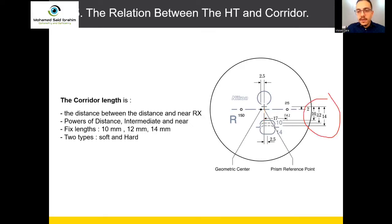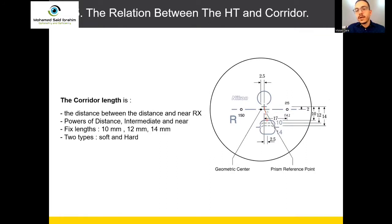We have three types of corridor: 10, 12, and 14. The 10 starts from here to here. So this is the corridor lens — from the cross to the beginning of the reading area. The corridor is not from this circle to this circle. No, it's just from the cross, from the center of the progressive, to the beginning of the circle of reading.